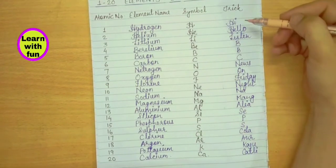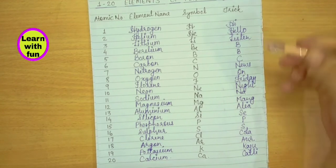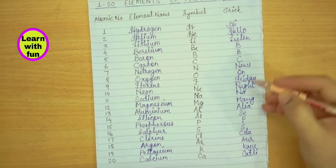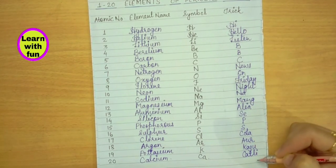So here is the trick, let's revise it once: Hi Hello Listen BBC News On Friday Night Now Maang Aaliyah Se Paise Cola Or Kaju Katli.